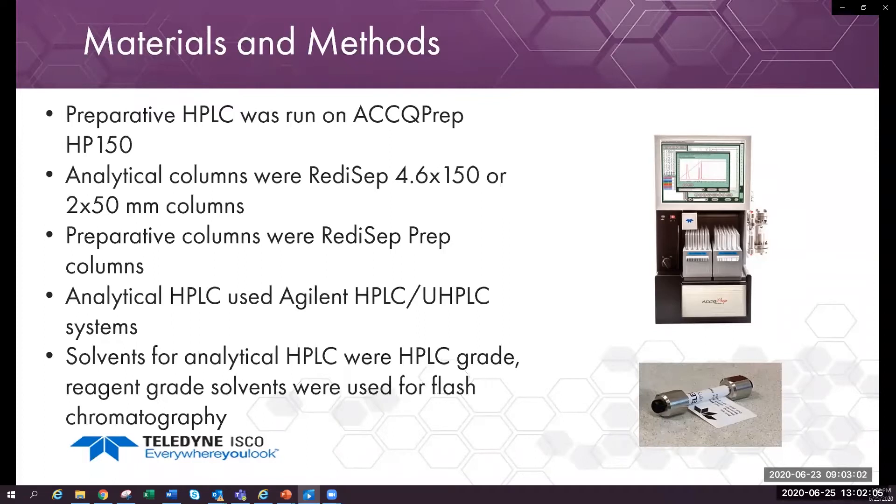Analytical scouting HPLC used ready-set analytical columns, either 4.6 by 150 or 2 by 150 millimeter. Agilent 1290 and 1100 systems were used for some of the scouting runs, but the Acuprep was also used for scouting runs.